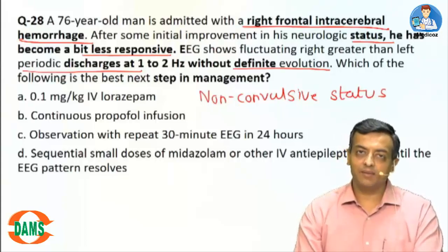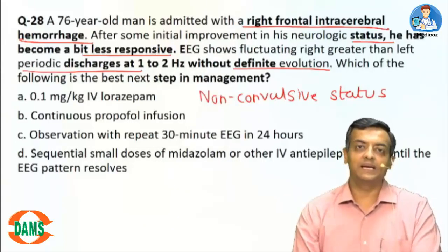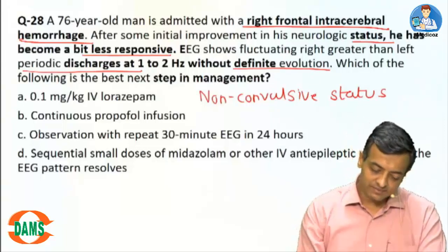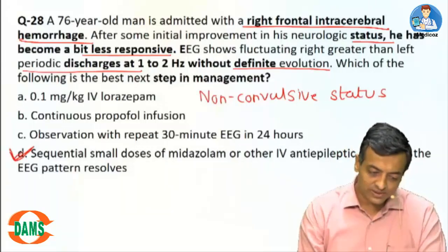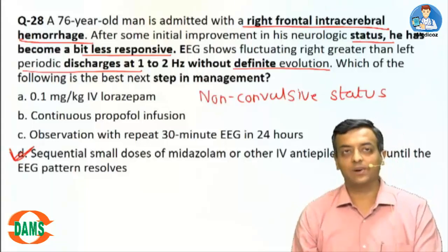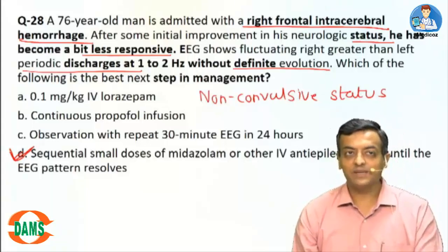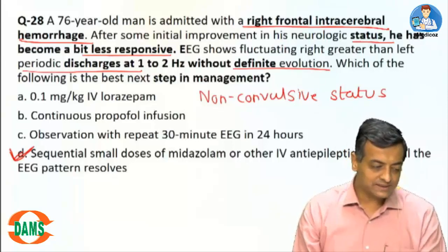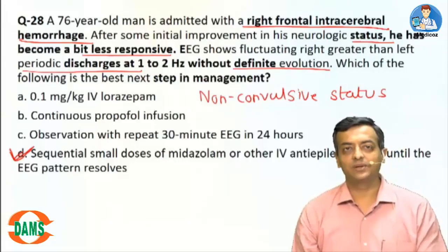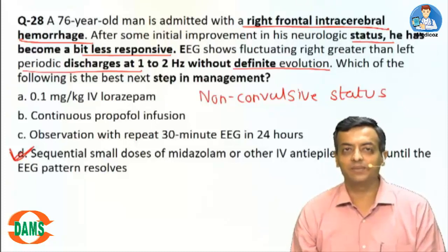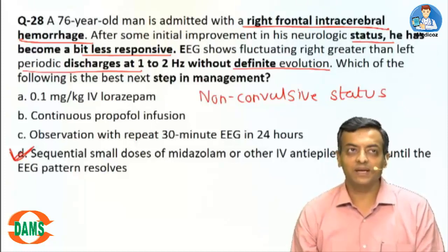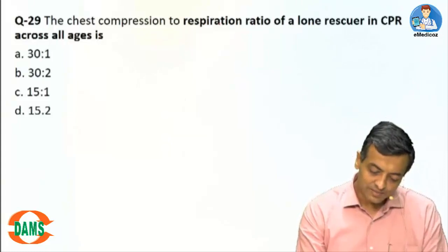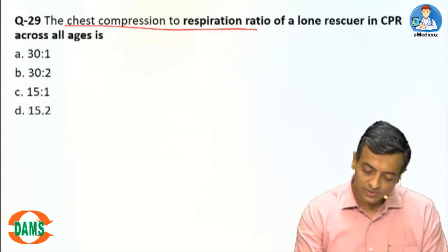This is typically non-convulsive status, which has been identified in elderly ICU patients with hemorrhagic disease and severe metabolic derangement. To treat this, the best management is to give sequential doses of midazolam. Midazolam does not cause much respiratory suppression, so it can be safely given to improve the sensorium.